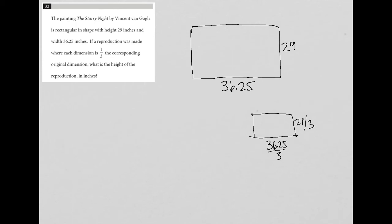So one-third times those, it just makes them a third. So 29 thirds and 36.25 thirds of the original dimensions. What is the height of the reproduction?